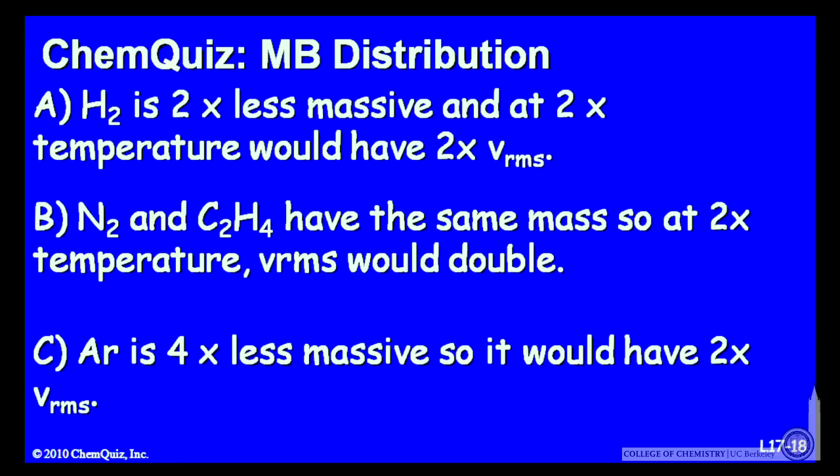Or C, argon is four times less massive than bromine, so it would have twice the root mean squared velocity. Think about those three possible explanations and make a selection.